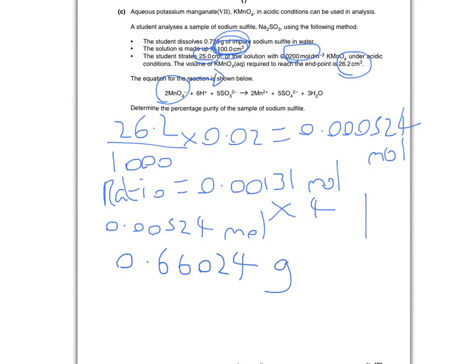Percentage purity. Well we've got that number of grams, but we started with 0.720 times by 100, and we get our final percentage divided by 0.72, which is 91.8%. Five marks in the bag.